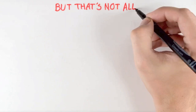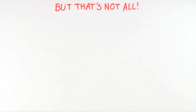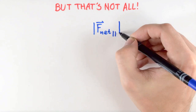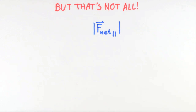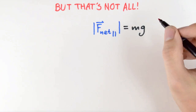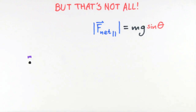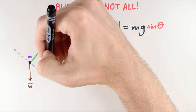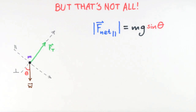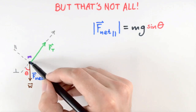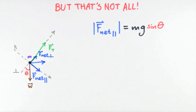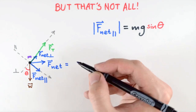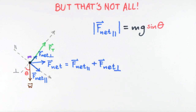We can find other unknowns in this problem as well. For example, we can solve for F net parallel. From the free body diagram, only the weight force component along the parallel direction contributes to F net parallel, so we can solve for that. Now we have both F net parallel and F net perpendicular, and so we know everything about the net force just from observing the motion.